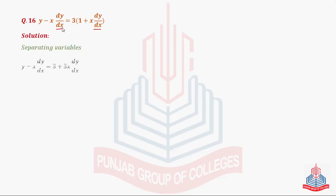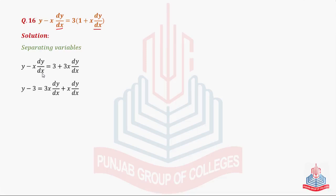First of all, separating the variables — humne 3 ko right hand side ki dono terms se multiply kiya. Left side will remain same. Ab dy/dx dono ko ek taraf shift kar diya: 3x dy/dx and minus x dy/dx shifted to the right hand side will become x dy/dx. So we have y minus 3 is equal to 4x dy/dx.